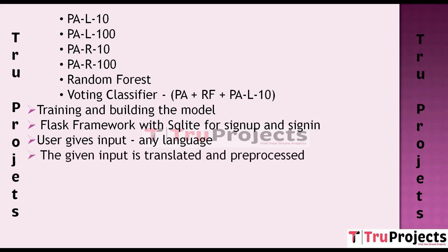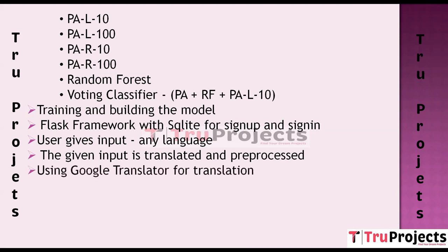The given input is translated and then preprocessed. TF-IDF — Term Frequency-Inverse Document Frequency — is a technique used to preprocess text data. It transforms text into numerical feature vectors by considering the importance of words in relation to the entire dataset. This step is essential for preparing the user's input for classification, using Google Translator for translation and TF-IDF for processing.